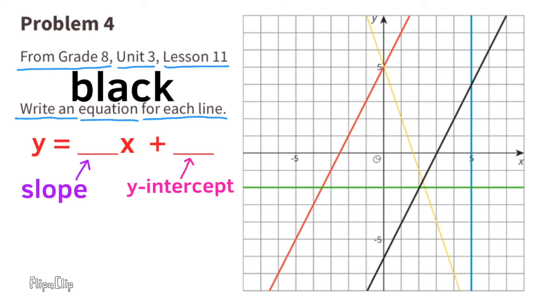Next, let's look at the black line. The black line has the same slope as the red line, and that's 2. And it has a y-intercept of negative 6. So the equation reads y equals 2x plus negative 6, which is the same as y equals 2x minus 6.